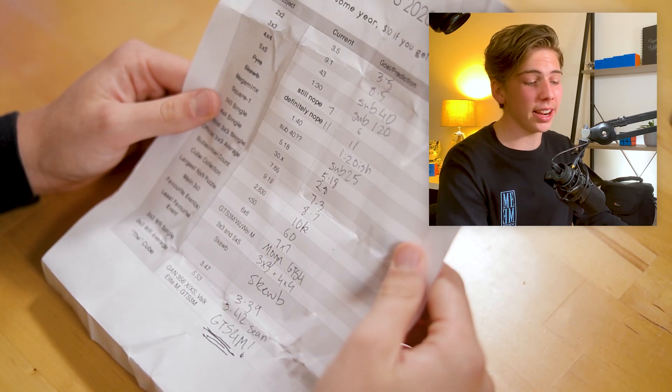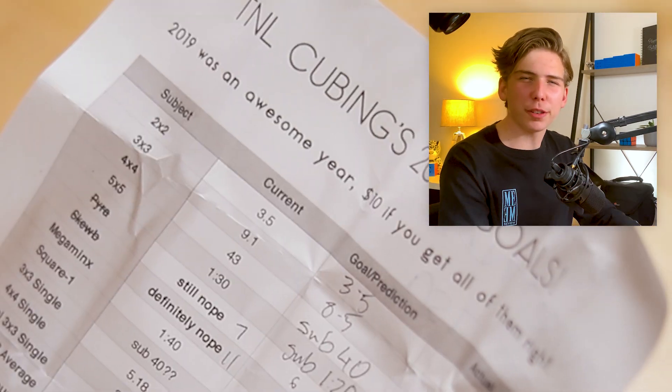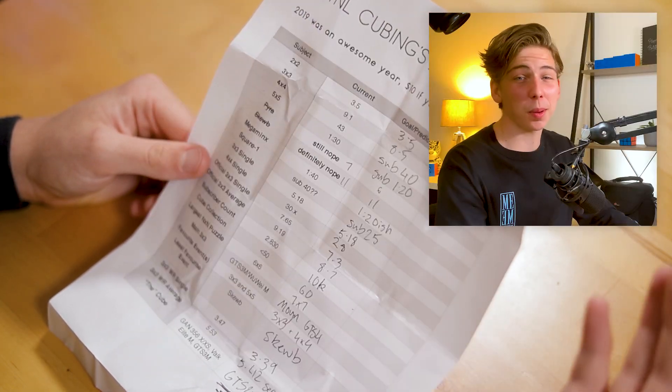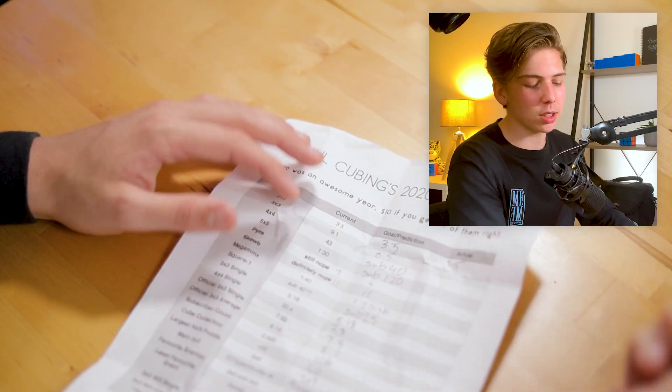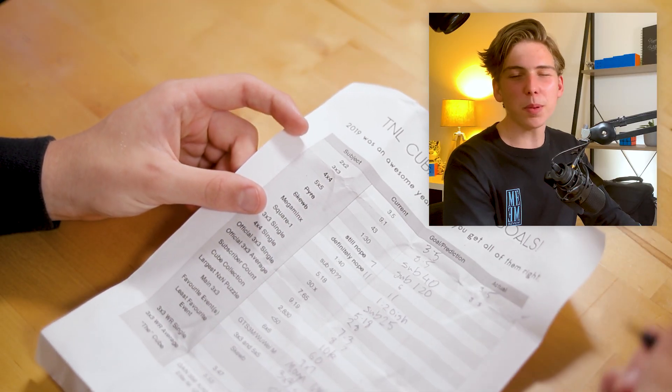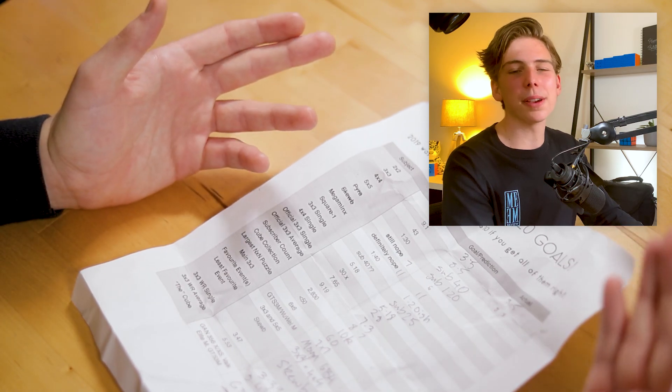Here they are, all of the current ones - at least they were current a year ago - and my predictions. For 2x2, apparently I was averaging 3.5, which I genuinely have not practiced 2x2 besides at a competition since then, so it's probably the same or even worse. My 3x3 average was 9.1 a year ago. I predicted 8.5. I didn't quite get to that, however I would say I'm about 8.8. It's only 0.3 off, but considering that's quite a big margin, I won't give myself a point for that.